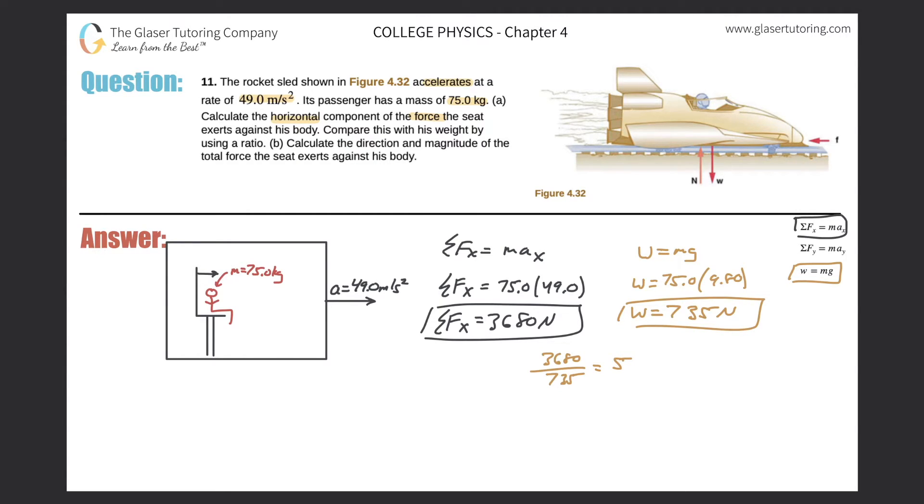So meaning it's 5 times greater, the acceleration of the ship, or I should say the force of the ship on the person rather than his weight. So then that takes care of that. Now let's take a look at part b.